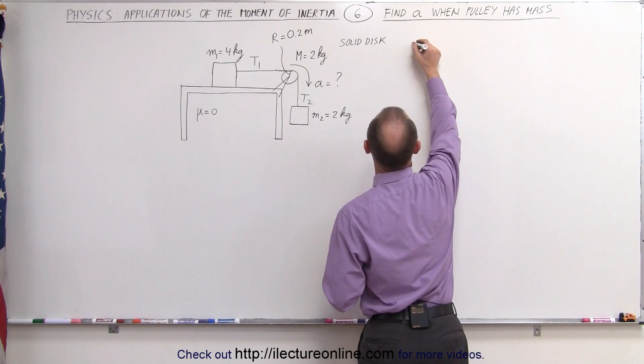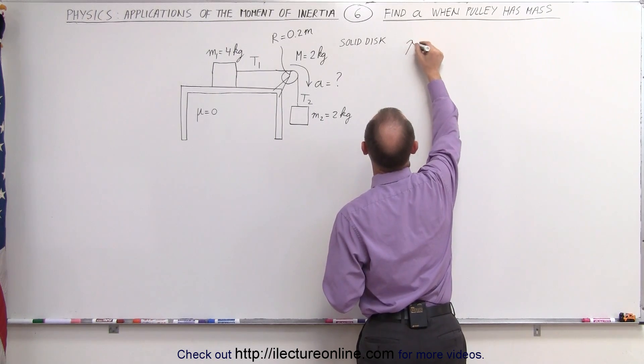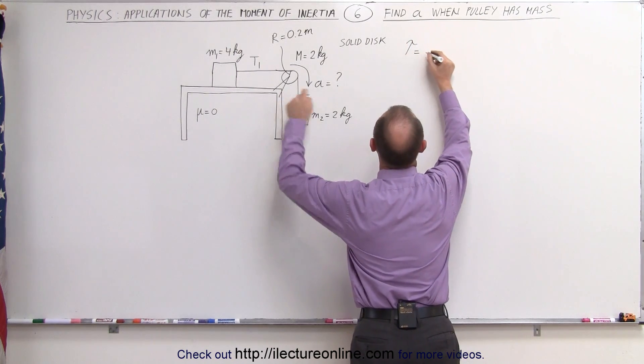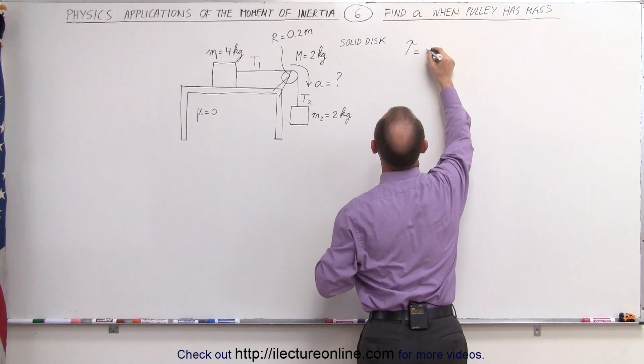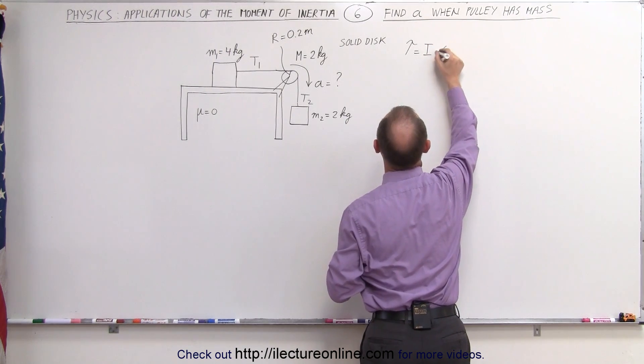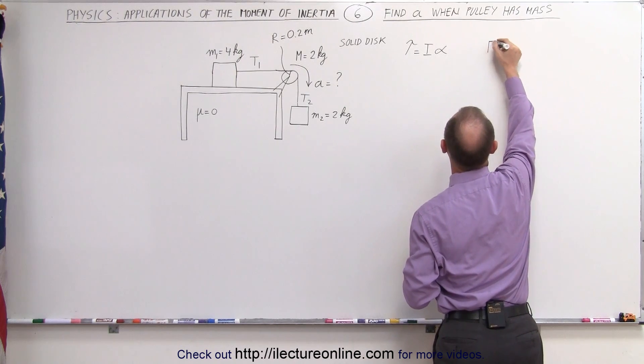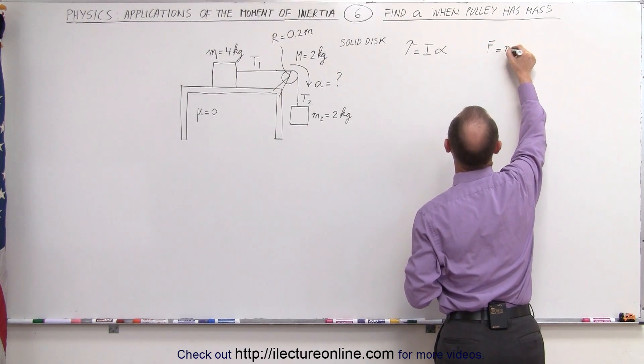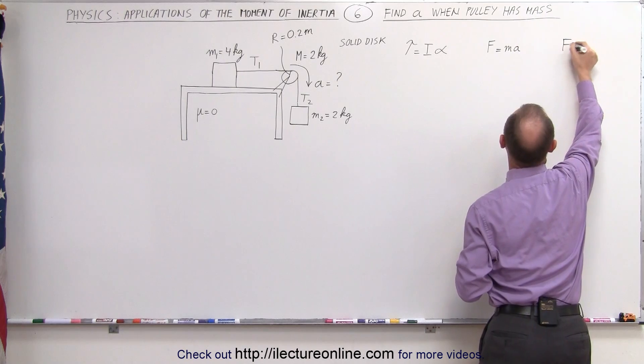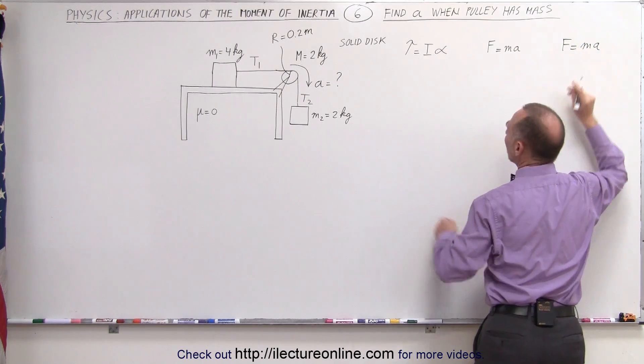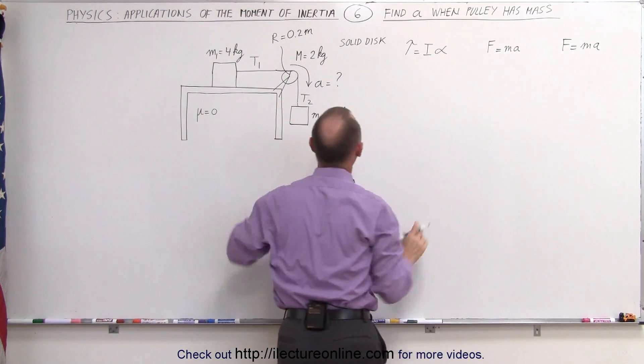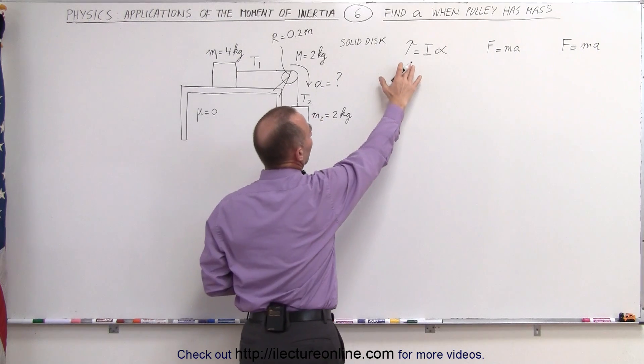The first equation will be that the torque on the pulley is equal to the moment of inertia of the pulley times the angular acceleration. We also will have two equations where we have F equals MA and F equals MA related to the mass and acceleration of the two blocks.